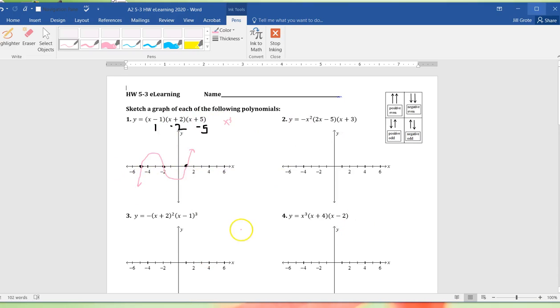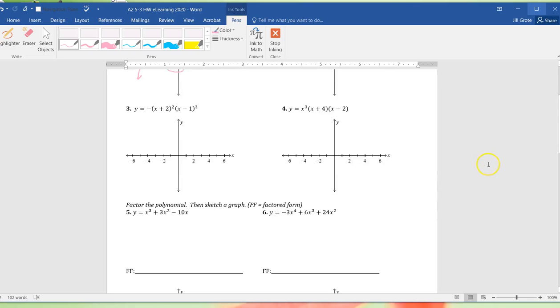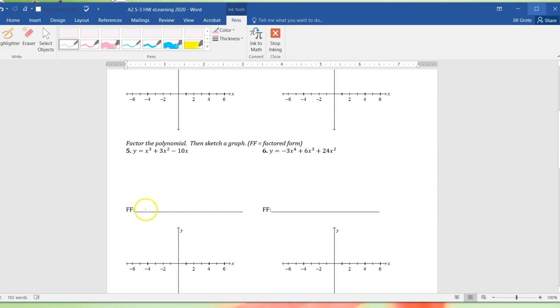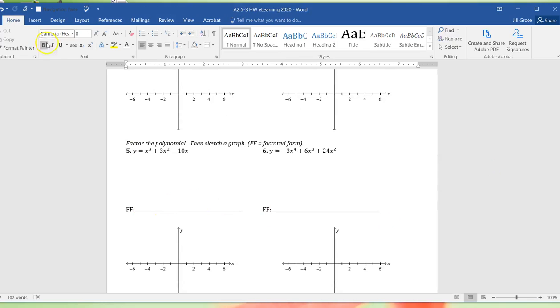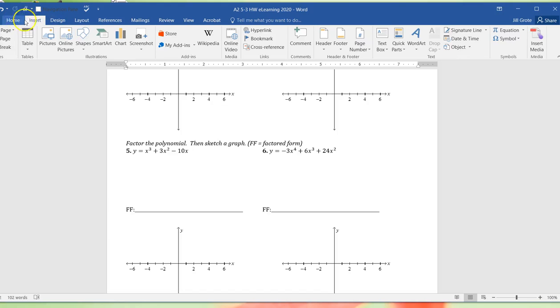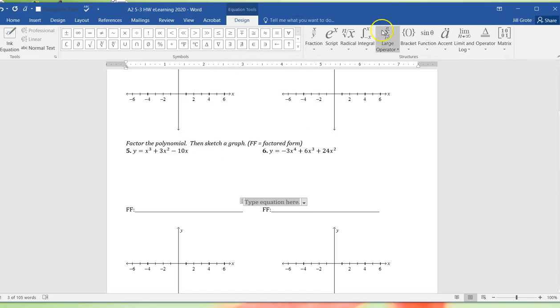Another quick thing with Word: let me scroll down here. This one's the factored form. If you want to type on this, you can actually type as well. To insert an equation, go to Insert. There's an option that says Equation, and you can type things.